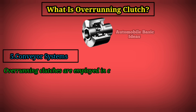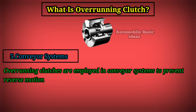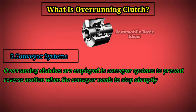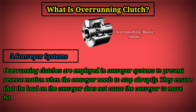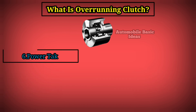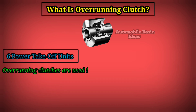Five, conveyor systems. Overrunning clutches are employed in conveyor systems to prevent reverse motion when the conveyor needs to stop abruptly. They ensure that the load on the conveyor does not cause the conveyor to move backward.